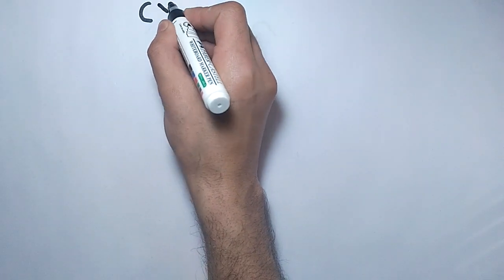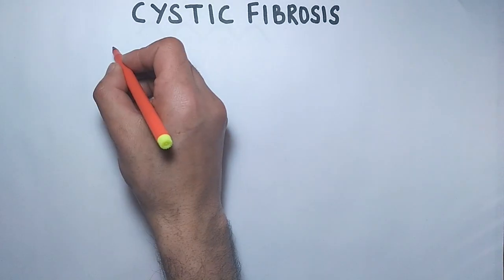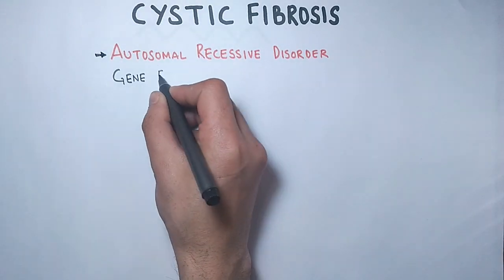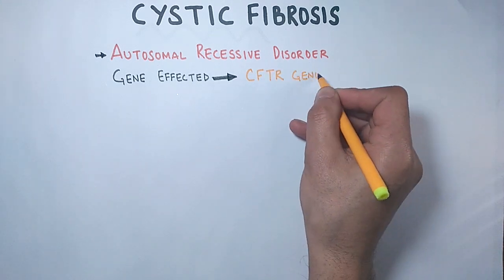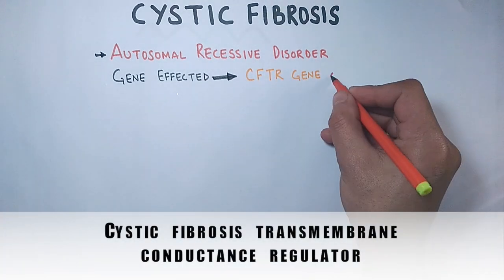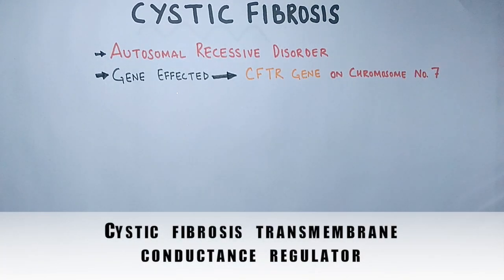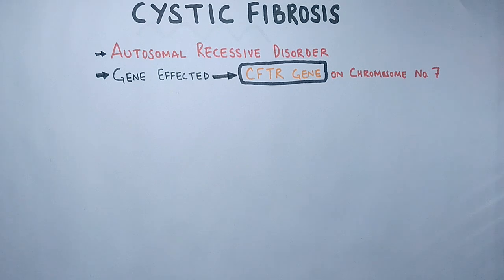In this video we'll be discussing cystic fibrosis. Cystic fibrosis is an autosomal recessive disorder where the affected gene is CFTR, present on chromosome number 7. First, we will see what the function of the CFTR gene is.